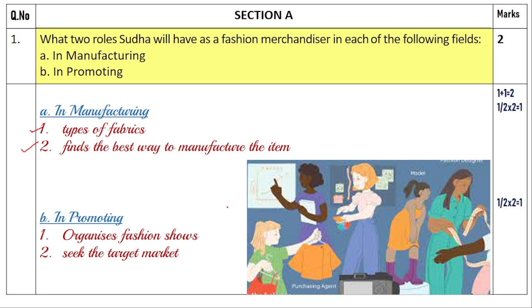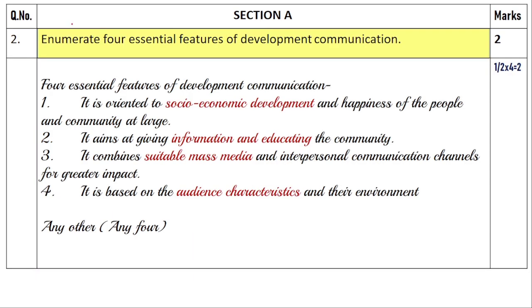Looking at the picture, it shows all the functions of the fashion merchandiser — deciding the target market, how much to produce, the types of fabrics, and the best manufacturing method. The second question asks to enumerate four essential features of development communication. Since this question carries 2 marks, you write five points and each point carries half a mark.